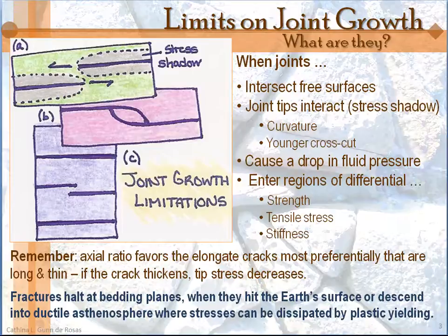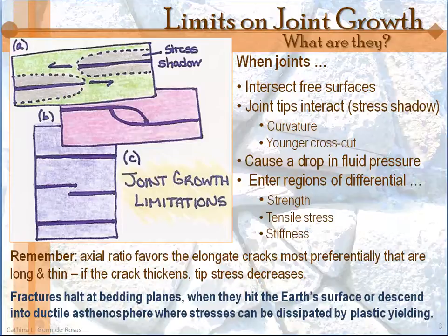Remember we talked before about axial ratios when we spoke about Griffith cracks, and we said that cracks with high axial ratios were preferentially going to feel the stresses and propagation. So another interesting thing that happens is if a crack is to widen or fatten up, then the stress on it is somewhat released. So when that axial ratio shrinks a little bit, you can also have a slowdown or even a halt in the propagation of that particular joint.